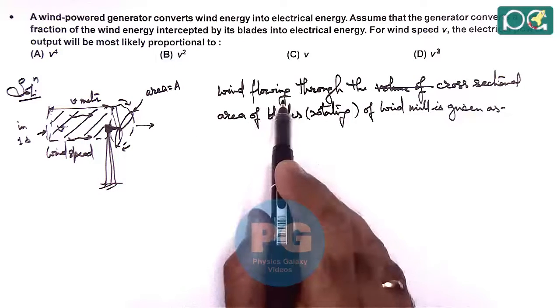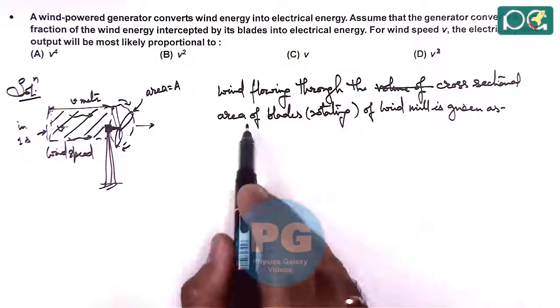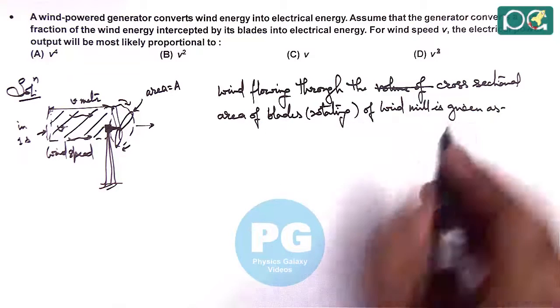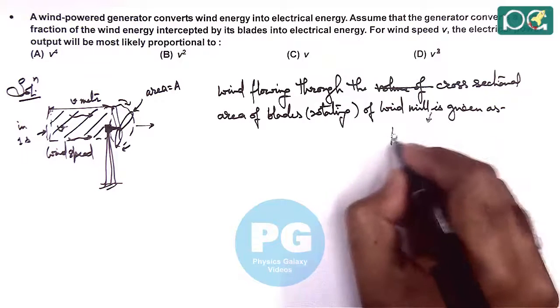So wind flowing through the cross sectional area of blades or windmill is given as, here we can write, per unit time.